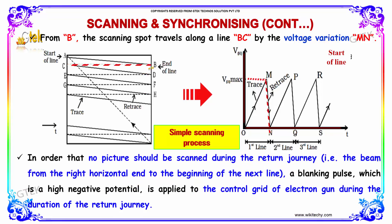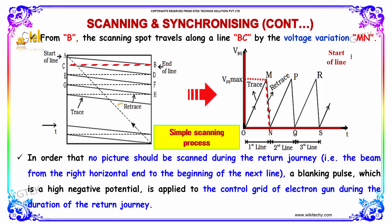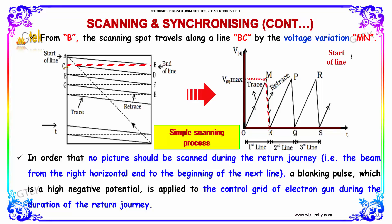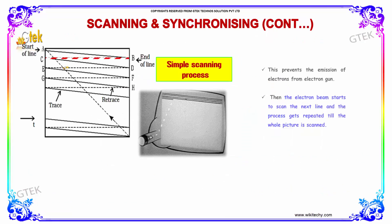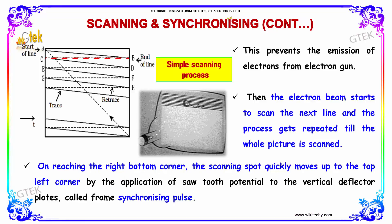From B, the scanning spot travels along a line BC by the voltage variation MN. In order that no picture should be scanned during the return journey, a blanking pulse, which is a high negative potential, is applied to the control grid of the electron gun during the duration of the return journey. This prevents the emission of electrons from the electron beam.